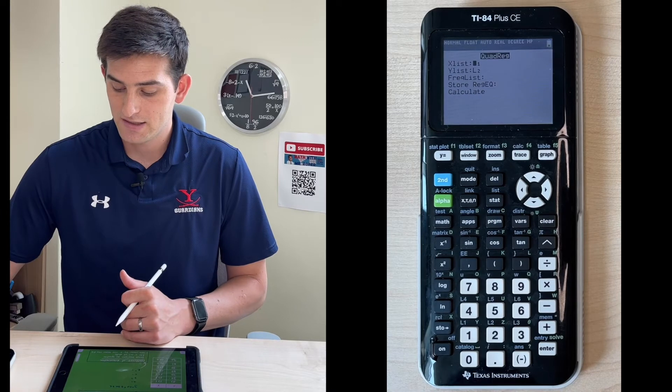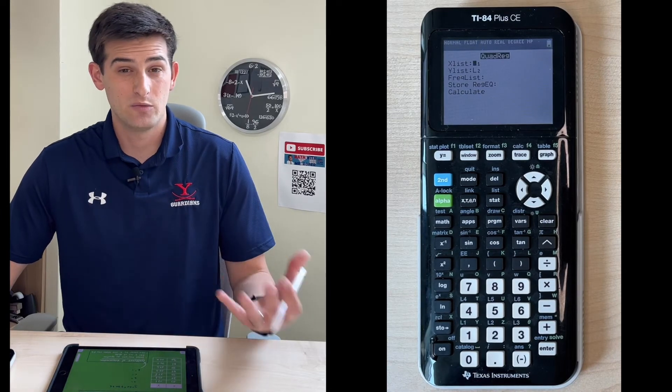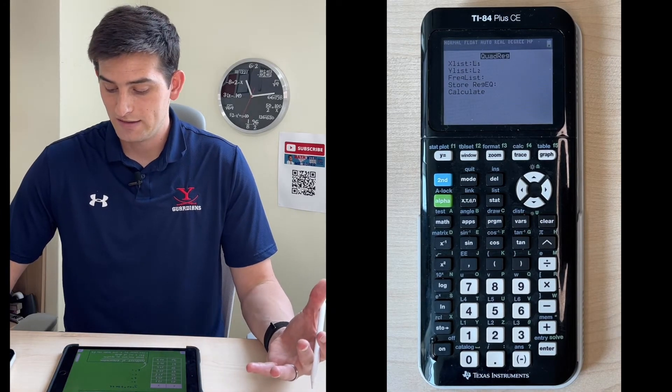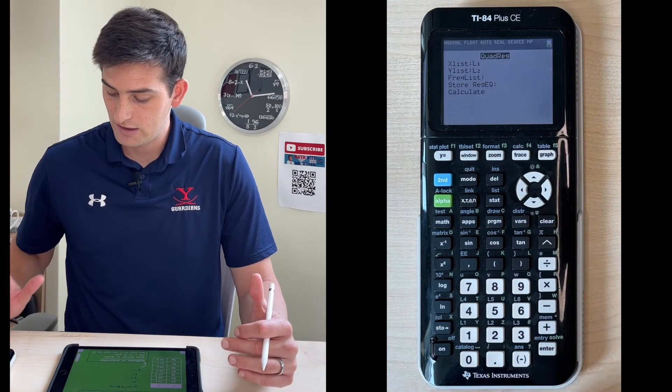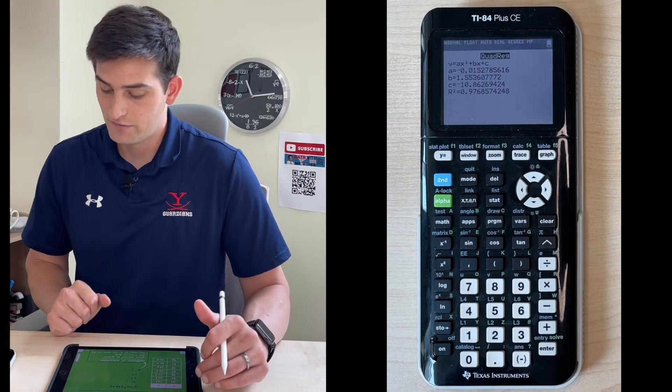We hit enter. Now for x list, we want that to say L1 because that's where we typed our x values. Y list we want that to say L2. Now we're just going to go down to calculate and we're going to hit enter, and the calculator is going to calculate it for us.